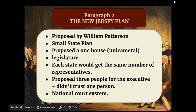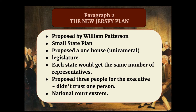The second paragraph is going to have to do with the New Jersey Plan. You are going to want to note that the New Jersey Plan was proposed by William Patterson and was known as the Small State Plan. At that time, New Jersey was a small state. This plan proposed a one-house legislature, and the word we use for that is unicameral. Each state would get the same number of representatives — however many representatives Rhode Island got would be the same number that Virginia got — so it was not based on a state's population.